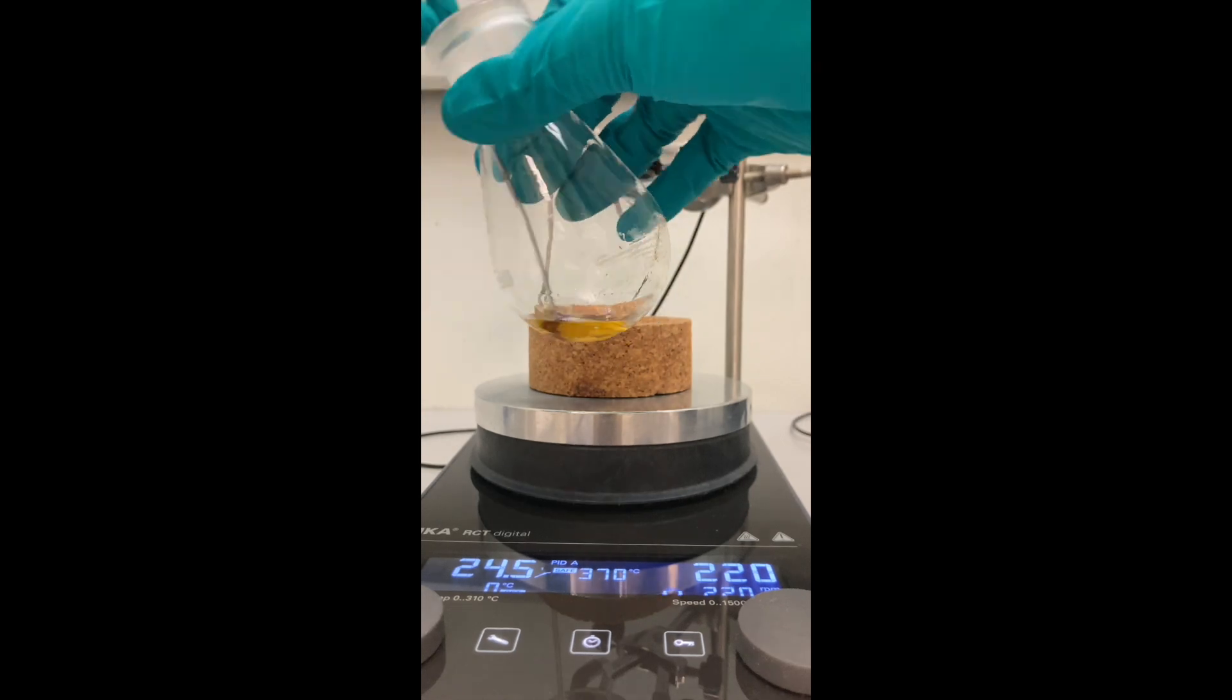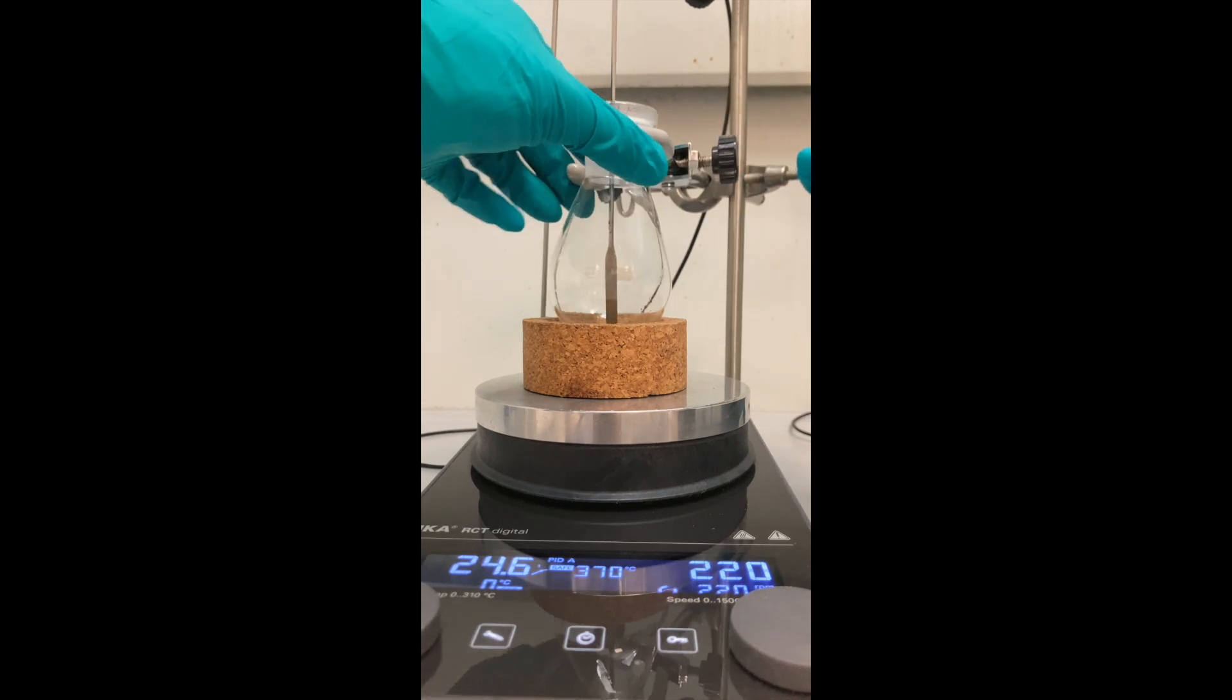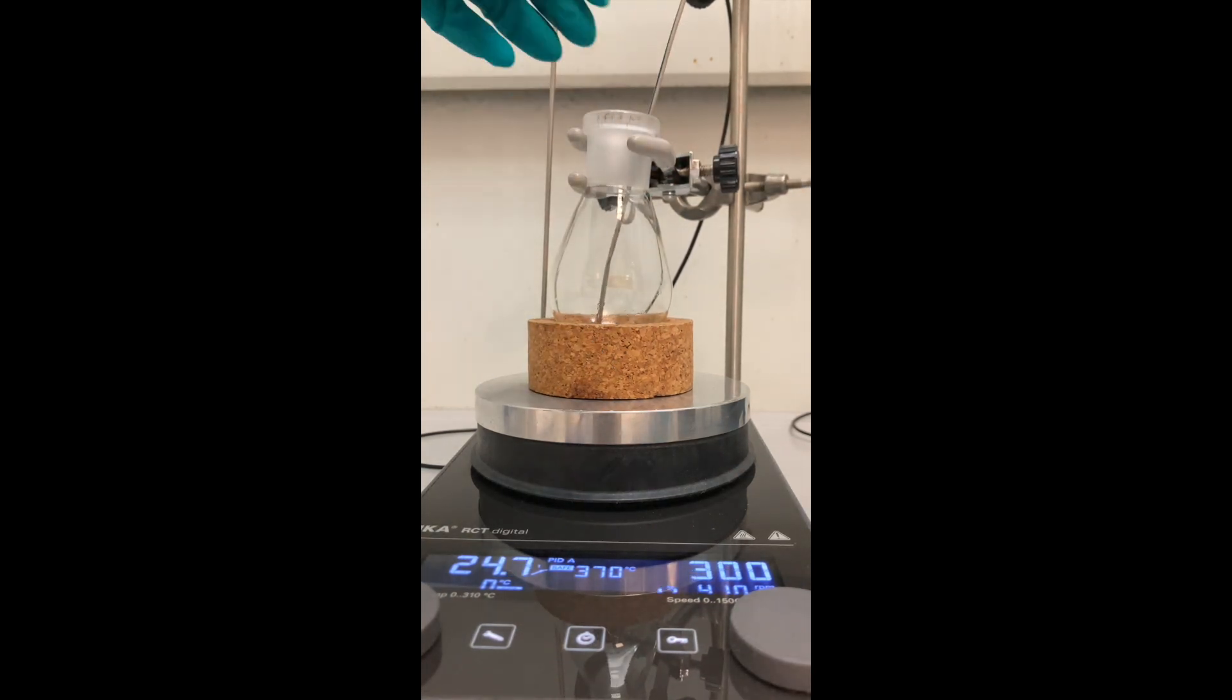First, I added the aldehyde and the amine into a round-bottom flask. Then, I poured in some acetic acid in order to dissolve the solids.